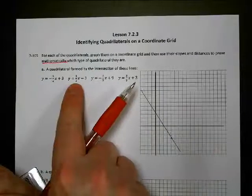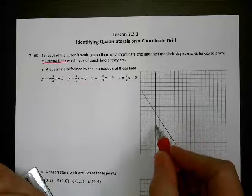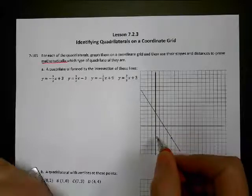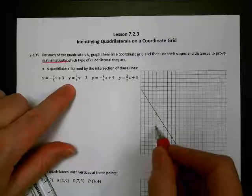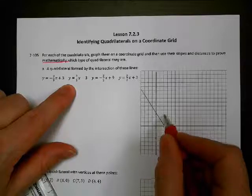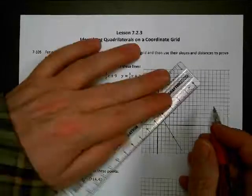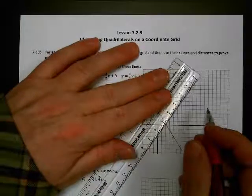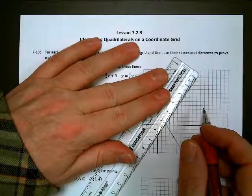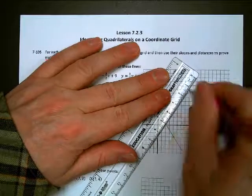Next one: we've got a slope of negative three, a y-intercept of negative three, and then a slope of three over two. So we're going to go up three and over two, and then up one, two, three, over one, two. There's our next line.